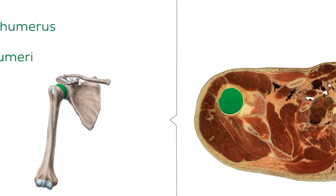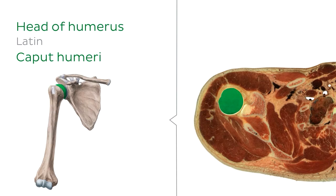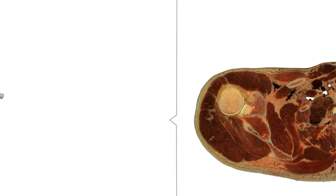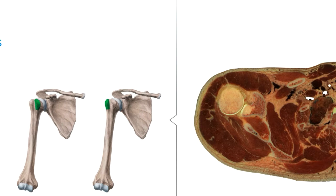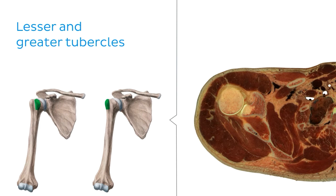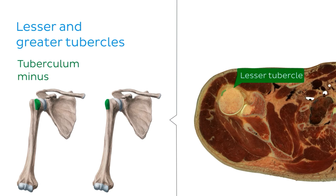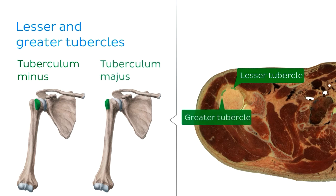Here we can see the head with its articular cartilage, which faces superiorly, as well as the lesser and greater tubercles just here, which are located in the anterior and anterolateral aspects respectively.